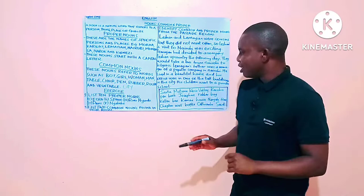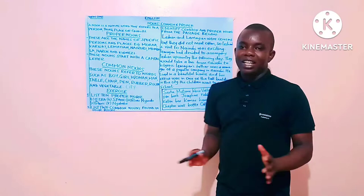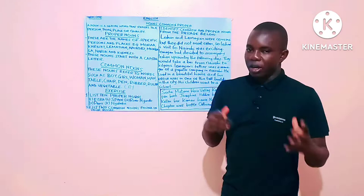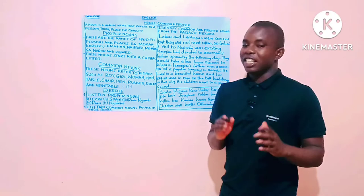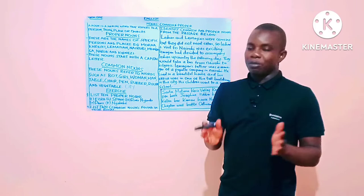Some of the examples that I've come up with is teacher Ezra. Ezra, Spain. Ezra is the name of a person. Spain is the name of a country. Then we have River Nyando, the name of the river. Then we have Paris, which is a city in France. And lastly, we have Nyaboke, which is also the name of a person.